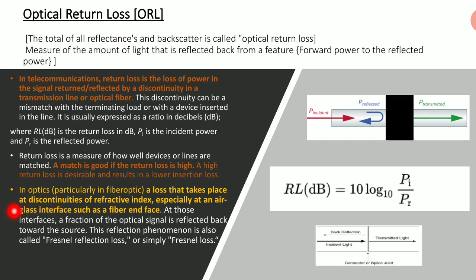This is especially relevant at an air-glass interface such as a fiber end face. Whenever there is an end of the fiber going to a connector, receiver, or photodiode, there is a discontinuity at the fiber end face, and ORL comes into the picture. At those interfaces, a fraction of the optical signal is reflected back towards the source — this reflection phenomenon is called fractional reflection loss, or simply fractional loss.